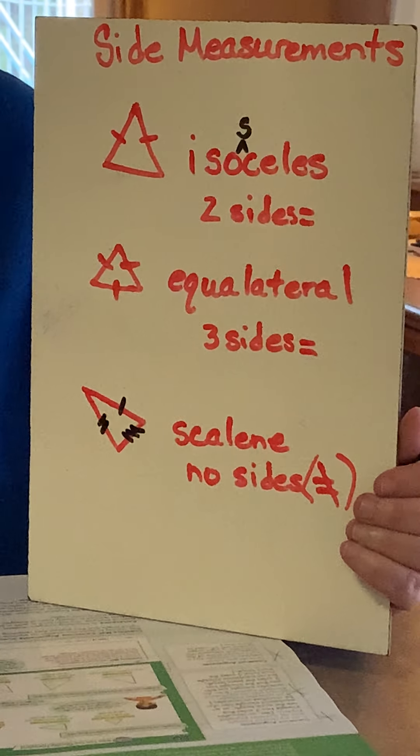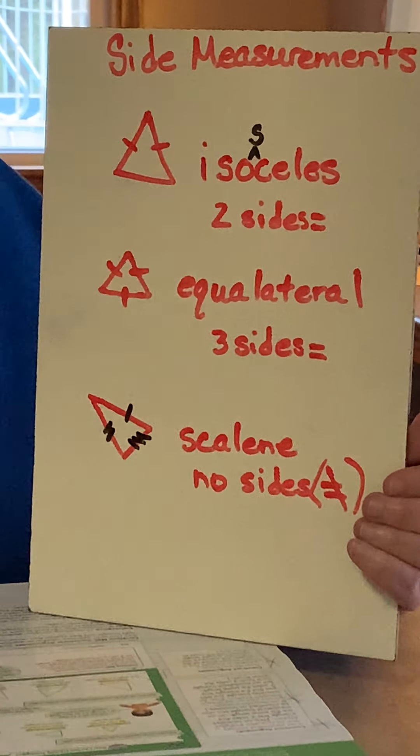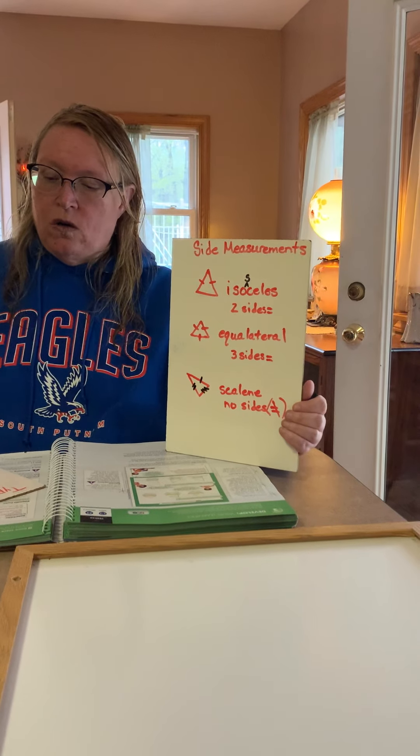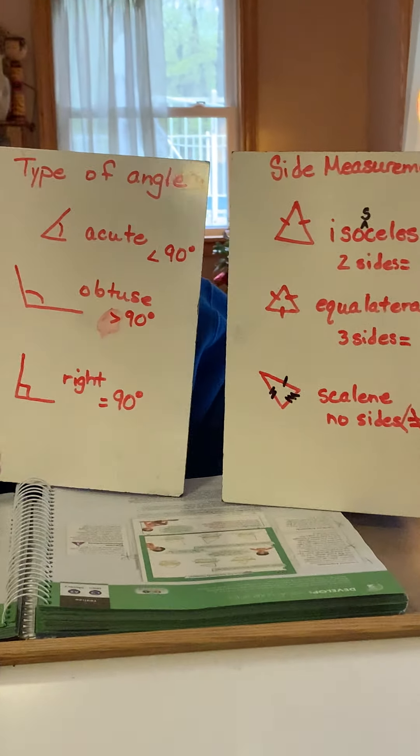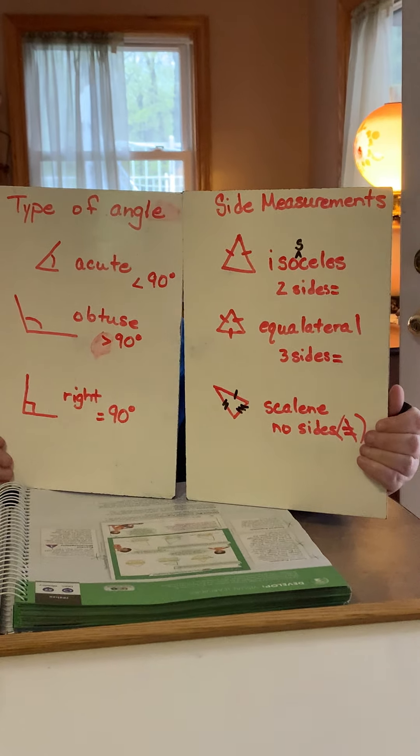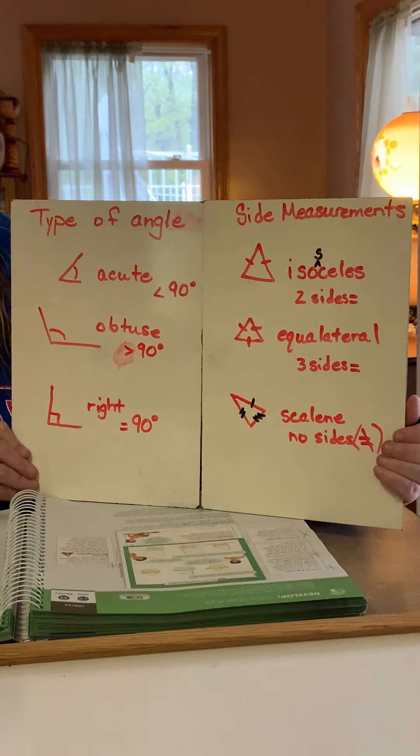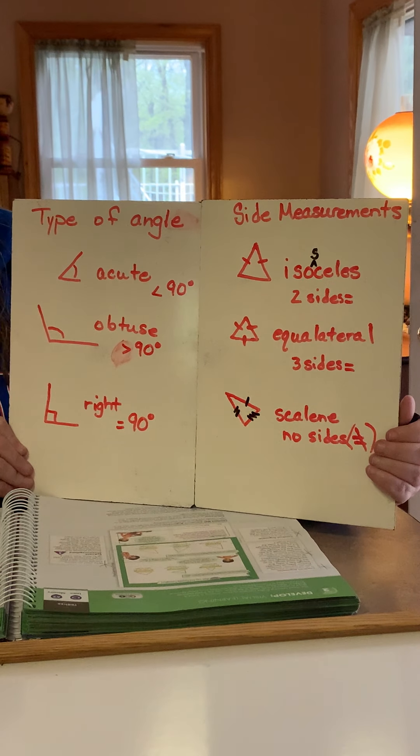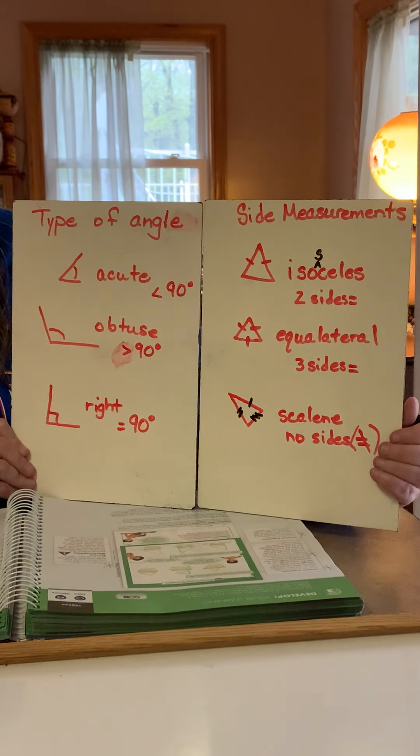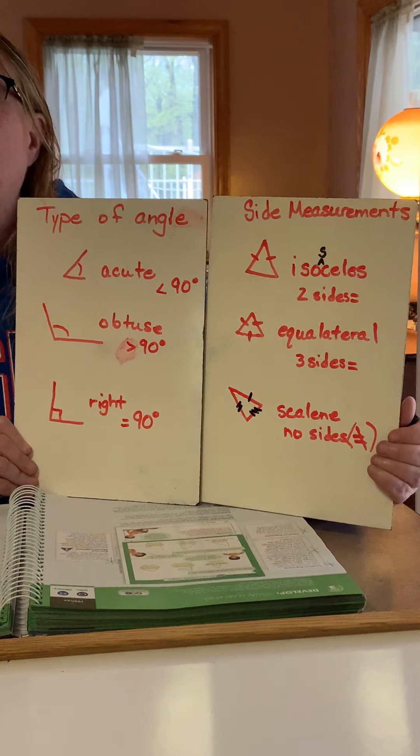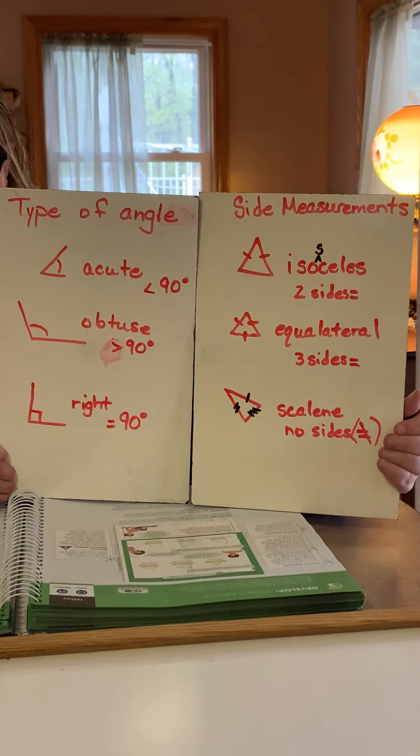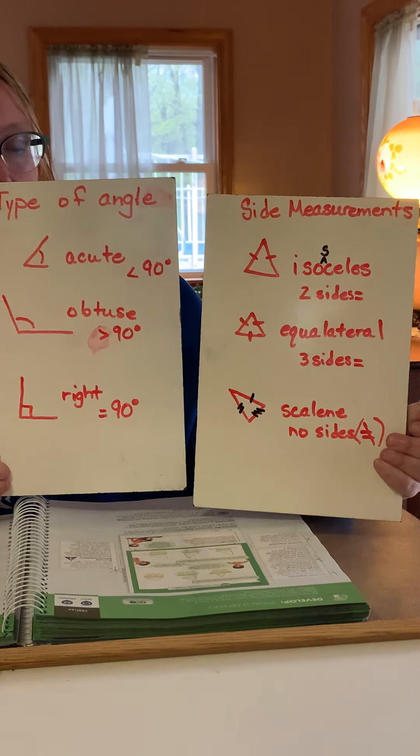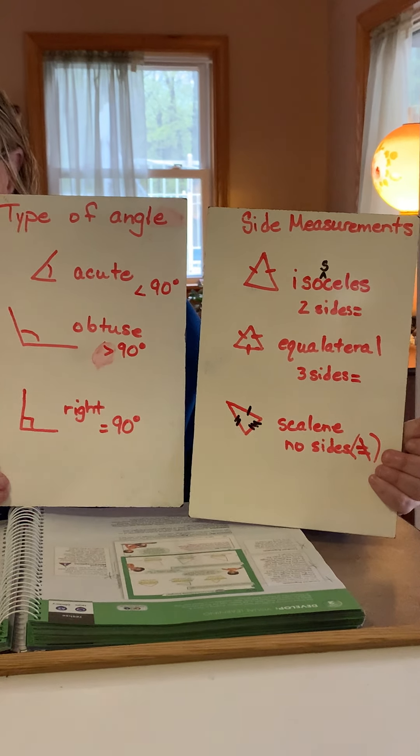But again, so when you're going to do this, you're going to be looking at the triangles and you're going to be naming them. So you might have an acute equilateral. You could have a scalene obtuse. You could have an isosceles right. It's kind of difficult to draw, but it is possible. So you have to be able to give them two names when you do this. Remember that you're going to have to put two names for each one when you classify it.